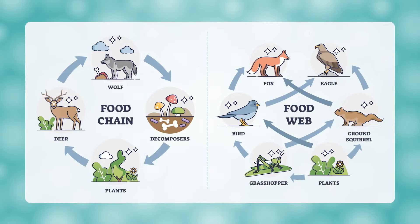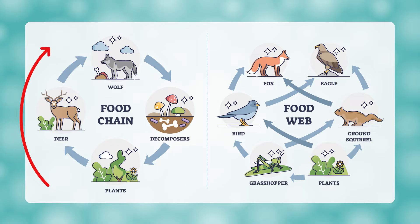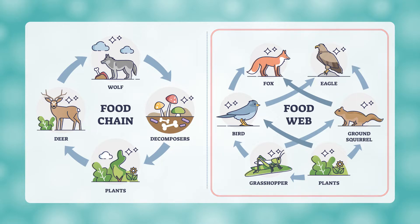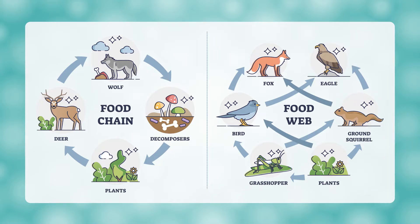Let's take a look at a simple food chain. At the bottom, we have the plants — our producers. They are eaten by a deer, who is a consumer and an herbivore. The deer is then eaten by the wolf, who is a carnivore consumer. After the wolf dies, it is decomposed by fungi growing in the soil. Notice the direction of the arrows — they show the transfer of energy in the food chain. The energy from the plant goes into the deer, so the arrow points from the plant to the deer. But surely the deer wouldn't be the only animal that eats the plants. To show all of the energy transactions that could go on in an ecosystem, we'll need a food web. Notice how much more complex a food web is than a food chain.